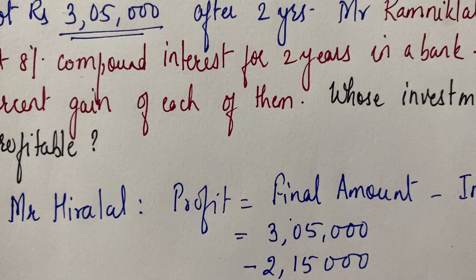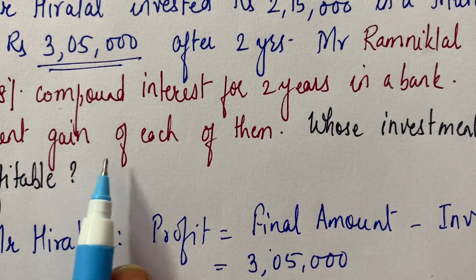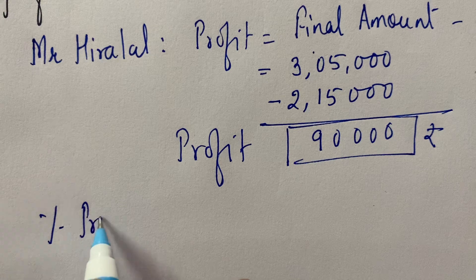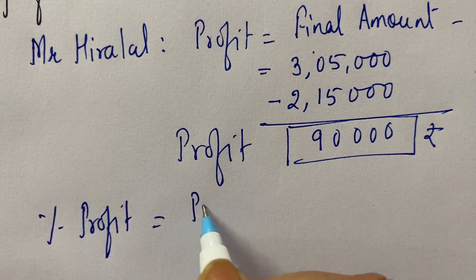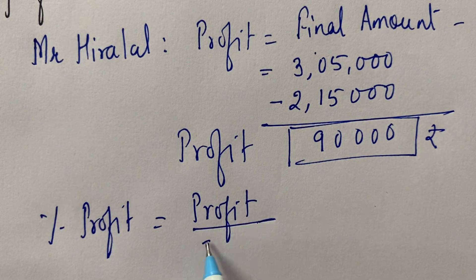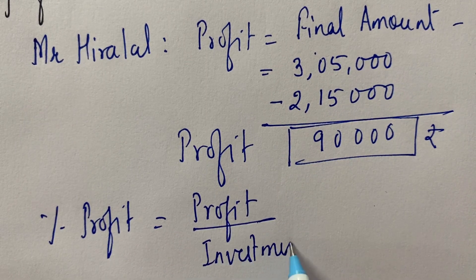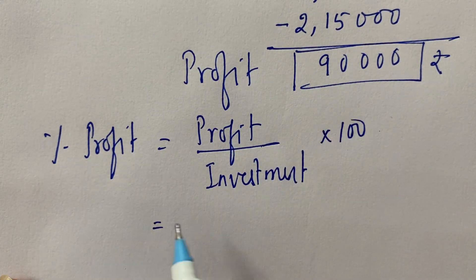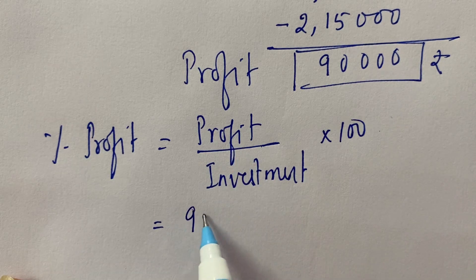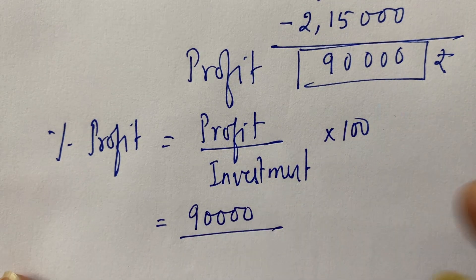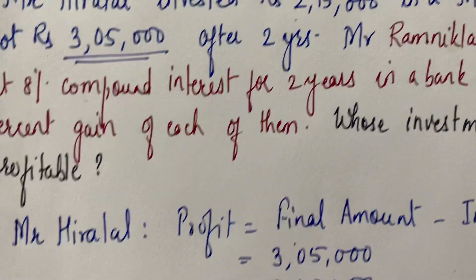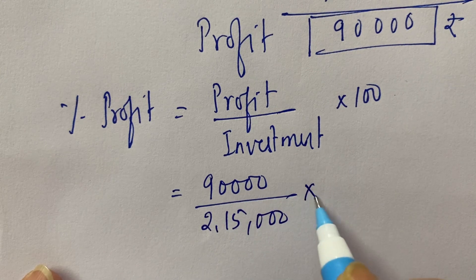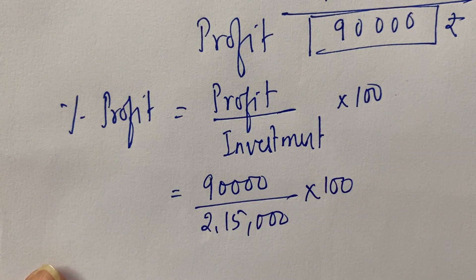Now what we have to find out is the percent gain of each of them — percentage profit निकालना है। So percent profit will be profit upon investment multiplied by 100. Profit kitna है? Investment था 2,15,000. Percentage निकालना है इसलिए 100 से multiply कर रहे हैं।